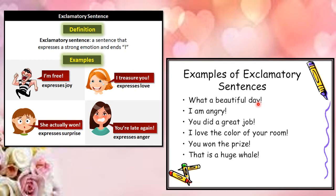'What a beautiful day!' — this shows the expression of excitement, something that excites you. 'I am angry!' — anger is a strong emotion, so we use exclamation point at the end. 'You did a great job!' — also expressing strong emotion. 'I love the color of your room!' — you are expressing emotions and thoughts of beauty.